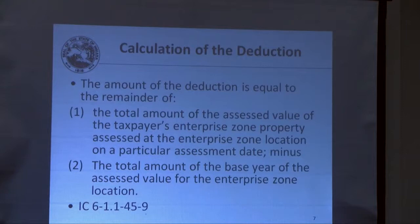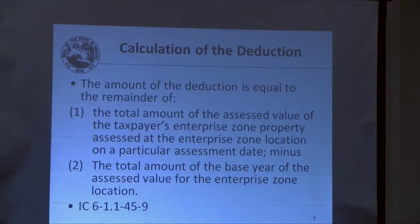The calculation for the deduction comes from Indiana Code 6-1.1-45-9. It states that the deduction equals the remainder of: (1) the total assessed value of the taxpayer's Enterprise Zone property on a particular assessment date, minus (2) the total base year assessed value at that location. So the calculation is very basic — it's the total assessed value for one year minus the assessed value for the preceding year, and the difference between those two numbers is the deduction.